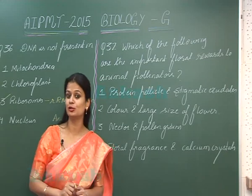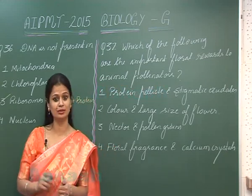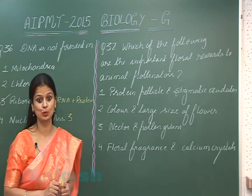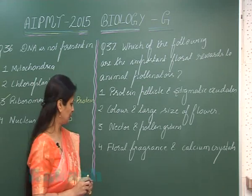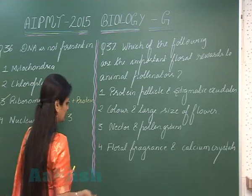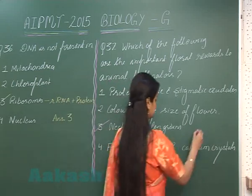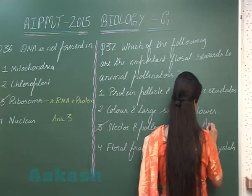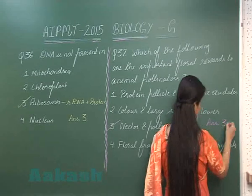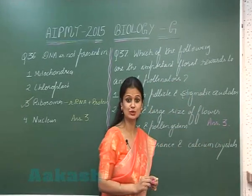Along with nectar, plants also produce edible pollen grains, and one such example is rose. So the right option is option number 3. The answer is 3.